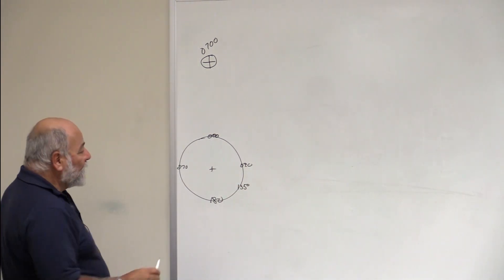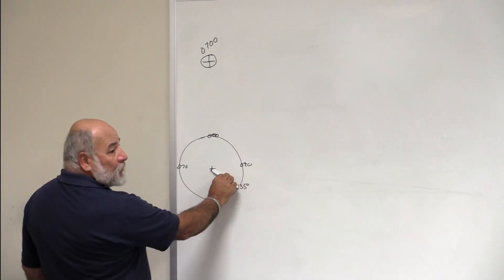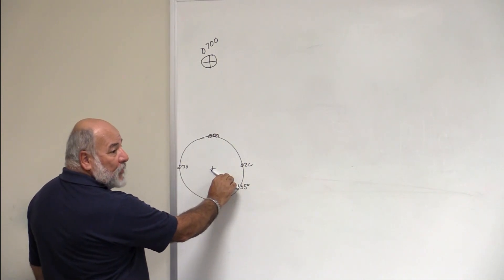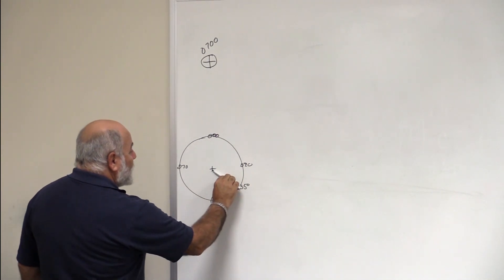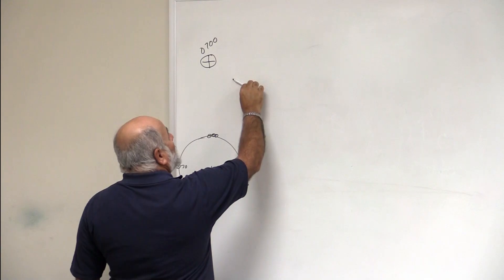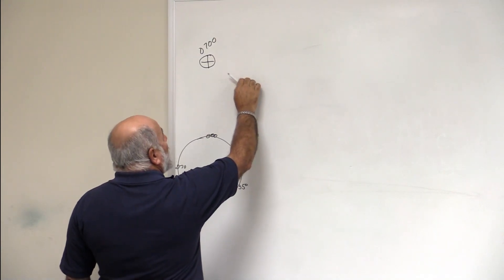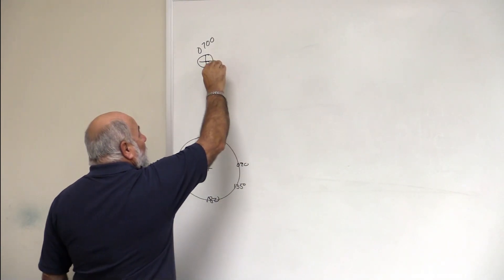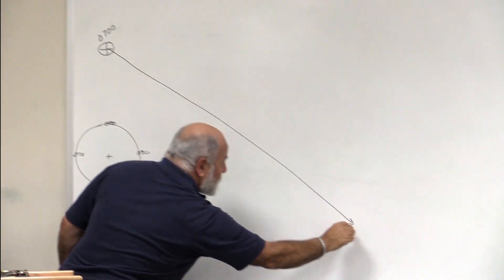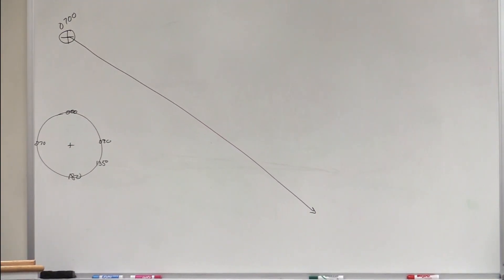Okay, so we go to the compass rose with our parallel rollers, our plotters, our Weems plotter, and we take 135 degrees and we roll it up to our fixed position and we draw that line, and we draw a line out however long we think we might be going.